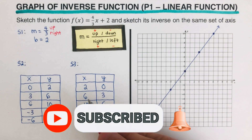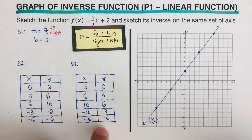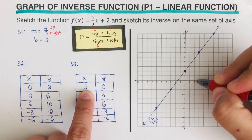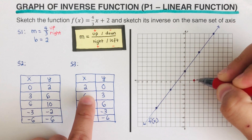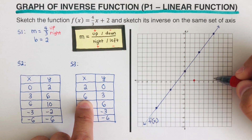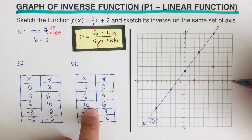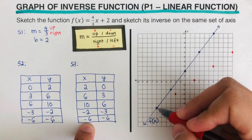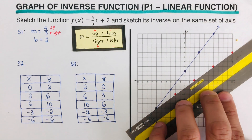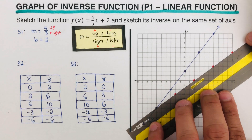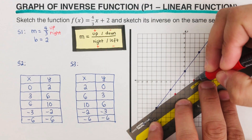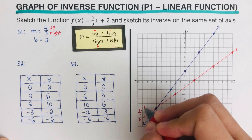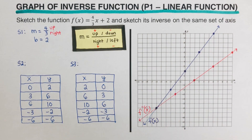Part of this step is to sketch the graph. With the switched table ready, we plot the new points: starting with (2, 0), then (6, 3). We connect these dots to get the graph of the inverse, which we label as f⁻¹(x). The red line is the inverse and the blue line is the original function.